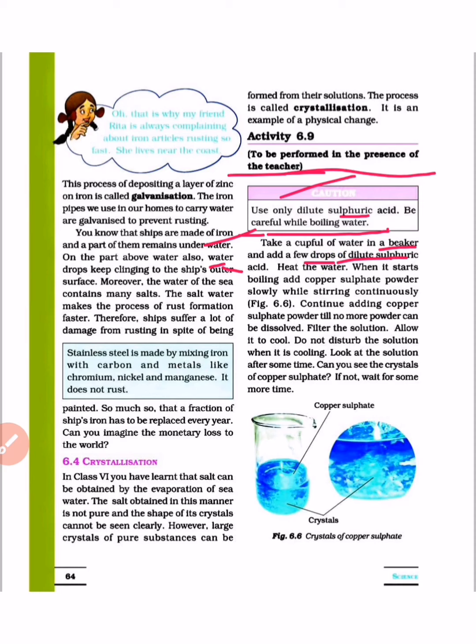Take a cupful of water in a beaker and add a few drops of dilute sulfuric acid, H2SO4. Heat the water. When it starts boiling, add copper sulfate powder slowly while stirring continuously.